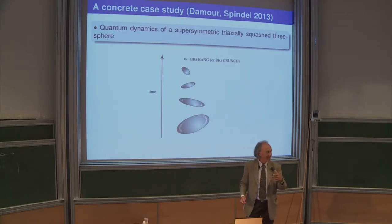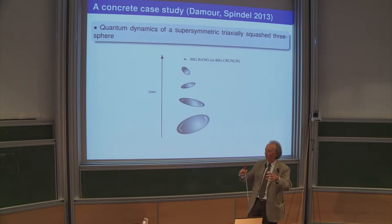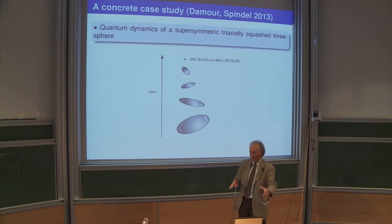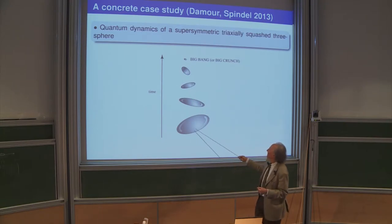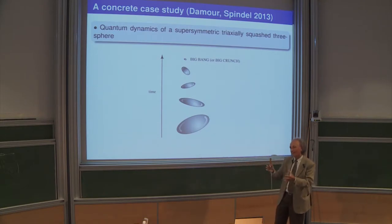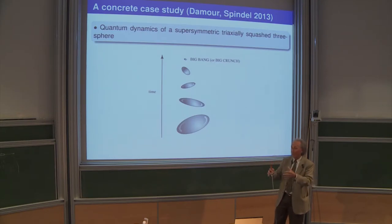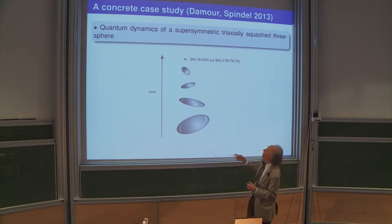The 3-sphere metric is invariant under the left SU(2) group and the right SU(2) group. We keep invariance under the left SU(2), so the geometry is homogeneous — you can translate over the 3-sphere — but it is not invariant under the right SU(2), meaning it is deformed. Intuitively, this looks like a rugby ball. This geometry will evolve in time together with the fermionic degrees of freedom, and we look at it near a big bang singularity, in a supersymmetric and quantum fashion.